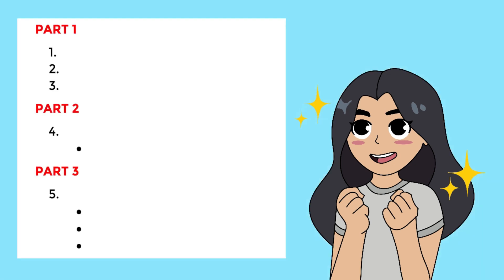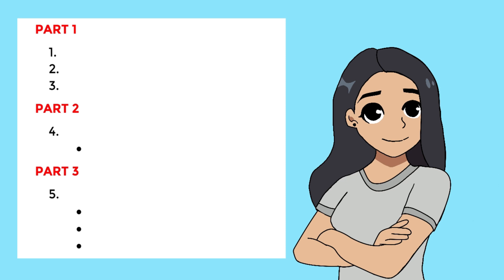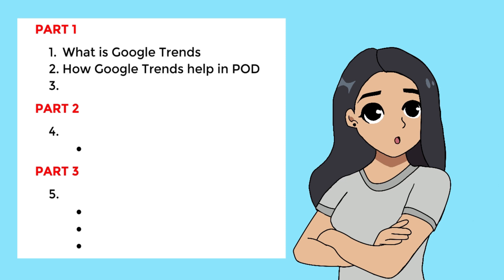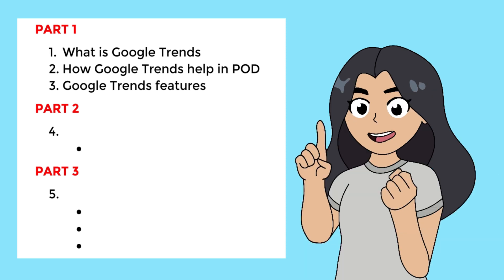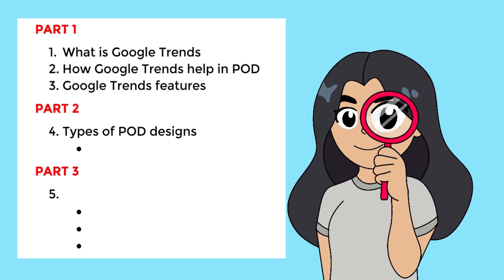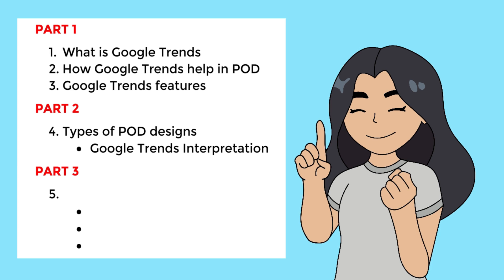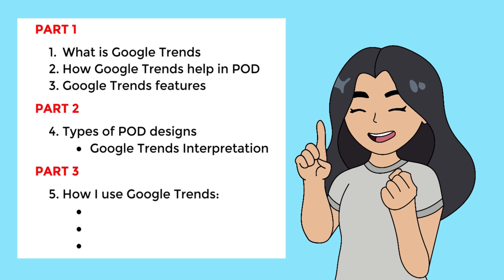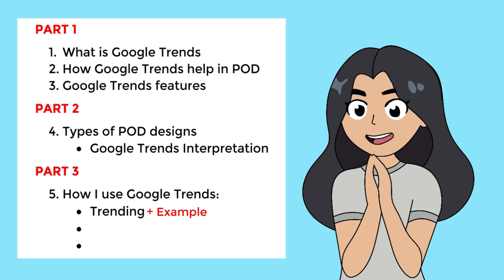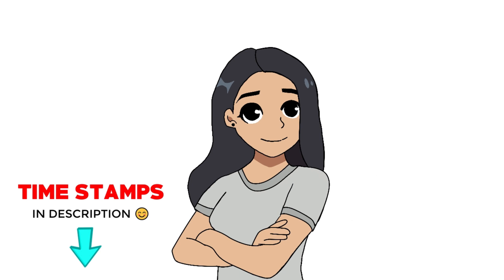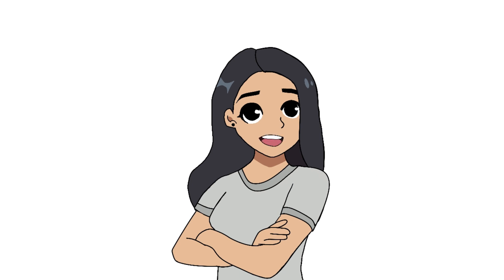This video will be divided into three separate parts. Part one will be an overview of Google Trends — what it is, how it can help you in print-on-demand, and its important features. Part two will show the different types of designs in print-on-demand and how they are interpreted in Google Trends. Part three is my step-by-step guide on how I use Google Trends for my Redbubble shop, including how I research trending, evergreen, and seasonal designs. Timestamps will be in the description, but I recommend watching all the way through, especially if you're new and confused on how to incorporate Google Trends with print-on-demand.